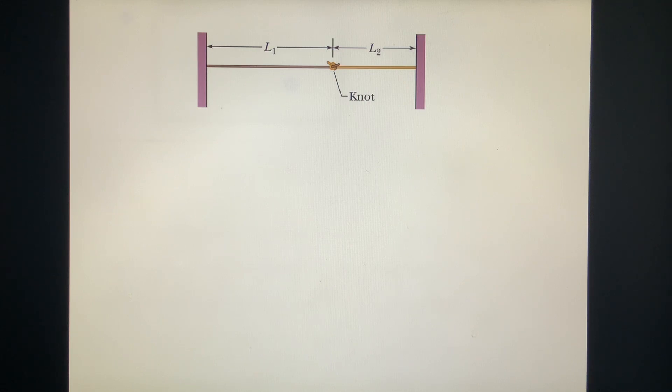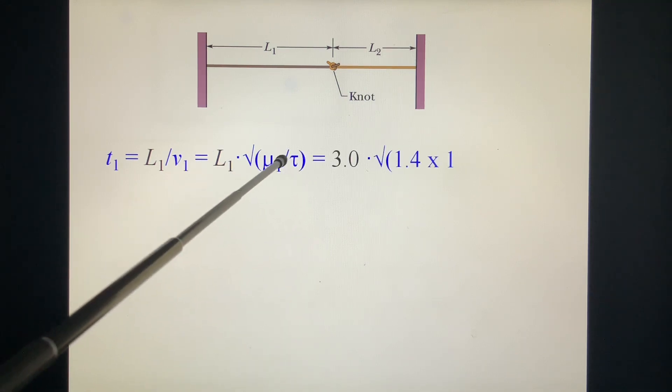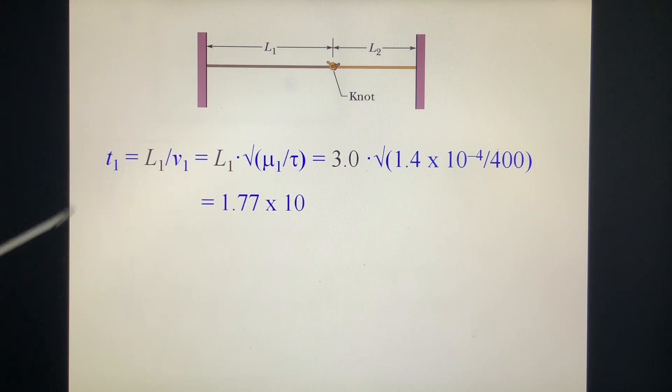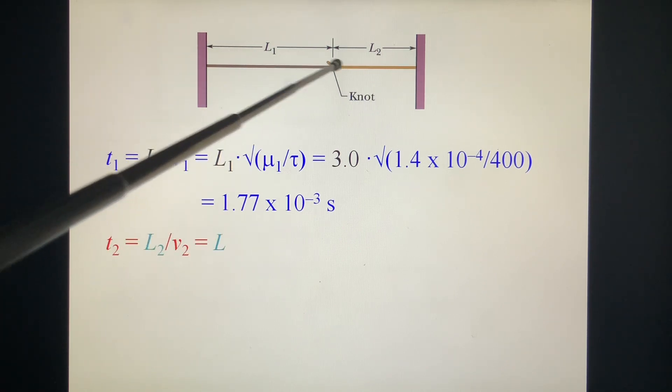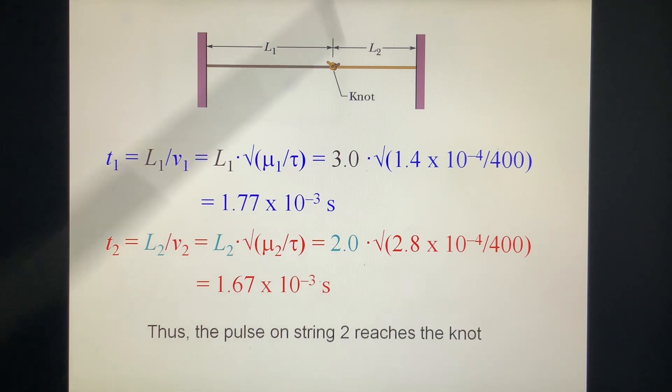We want to calculate the time t. The smallest t is the first one. Now, t = L/V, V = √(τ/μ). In the denominator, we invert it. We put the numbers inside. You get the answer for t₁. Also, we get t₂ = L₂/V₂. The tension will be the same. We put the numbers inside, we get time 2 is 1.62 × 10⁻³ milliseconds. This one is shorter, so the pulse on string 2 reached the knot first.